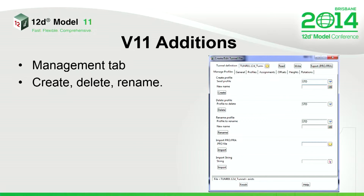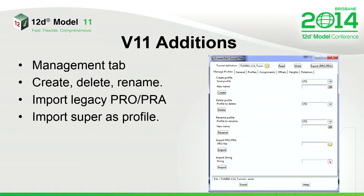When you go into tunnelling for V11 it's a little bit different - you'll notice there's a lot more tabs on the panel. The first tab is the manage panel; it allows you to create, delete, and rename profiles. The profiles are just a bunch of straights and arcs that define the shape of the profile at that point. It has some legacy input/output and allows you to draw a super string on screen and import that as a tunnel profile.